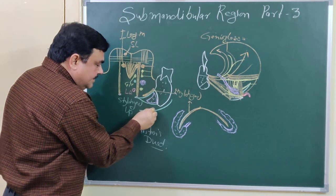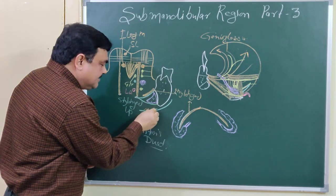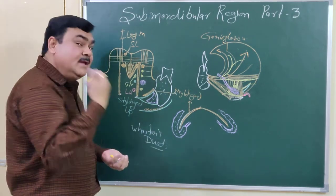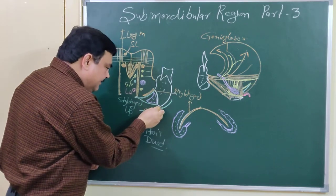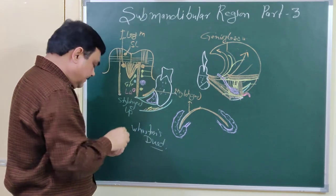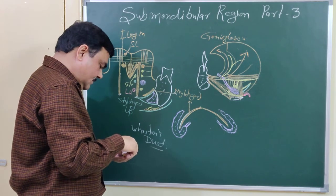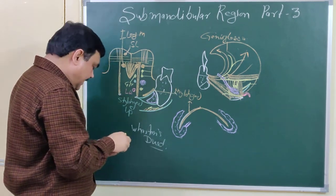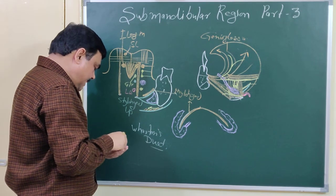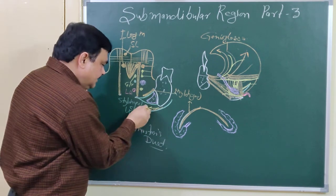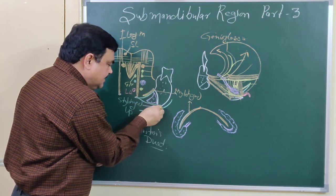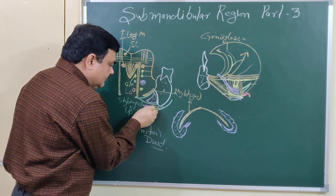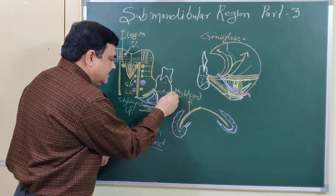On the lateral surface, here is the position of the skin, then there is the superficial fascia which contains muscle. In this region there is the platysma muscle, and one nerve — the marginal mandibular nerve, which is a branch of the facial nerve.